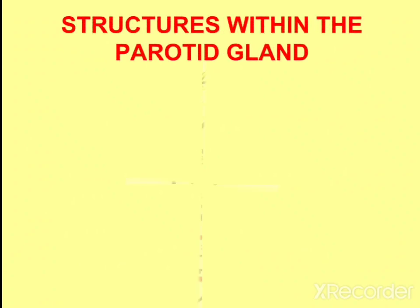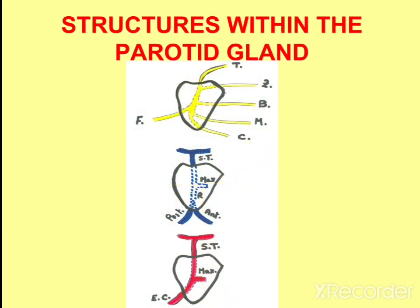The structures within the gland are depicted in this diagram: the facial nerve, then the maxillary and retromandibular veins, and then the external carotid artery and its terminal branches.